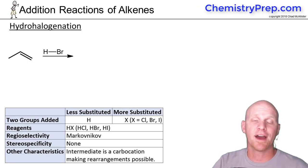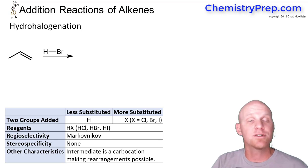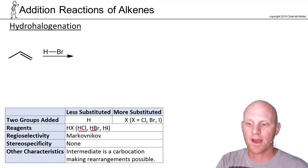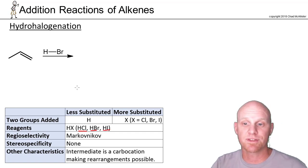The first actual addition reaction we'll look at is called hydrohalogenation, and it adds a hydrogen and a halogen across that alkene. Specifically this works with HCl, HBr, or HI, and the classic example we use here is with HBr.